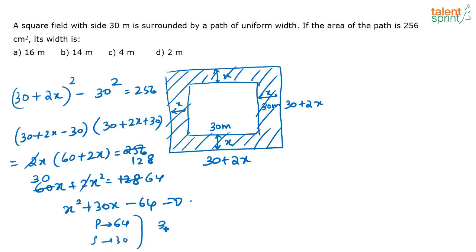So you have 2 numbers whose product is 64 and whose sum is going to be 30. So the numbers can be what? See 32 and 2. 32 into 2 is 64. 32 minus 2 is 30.